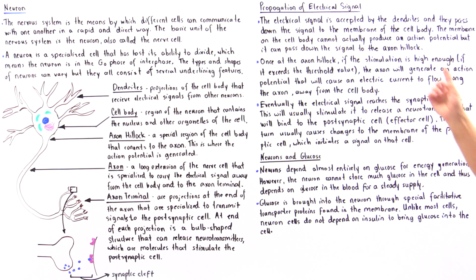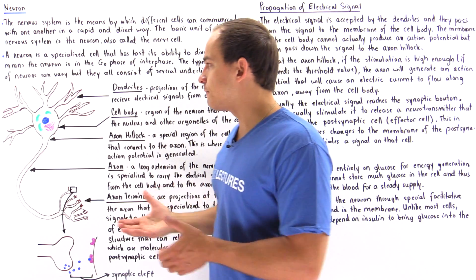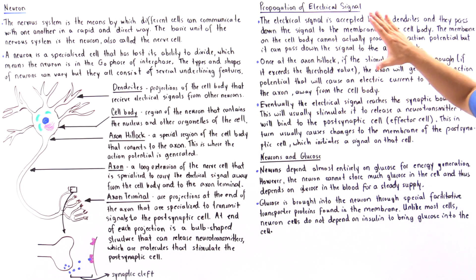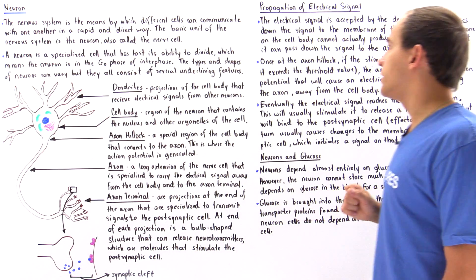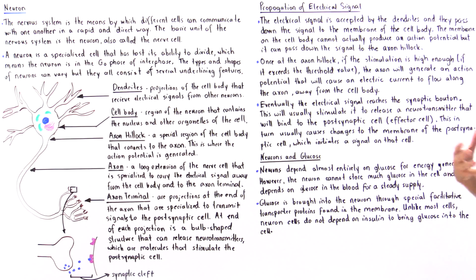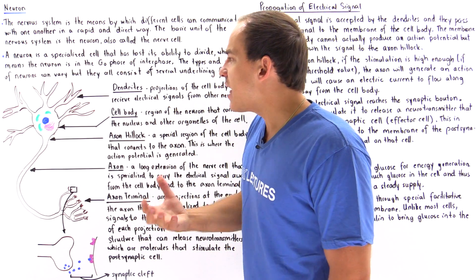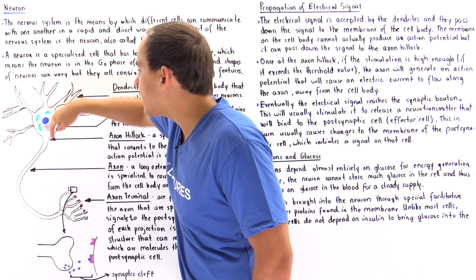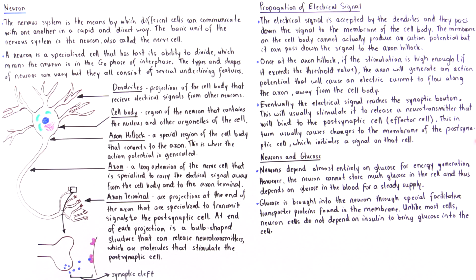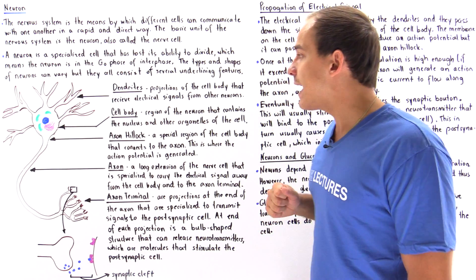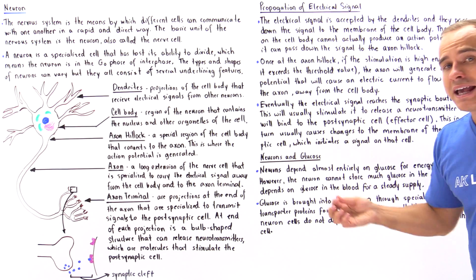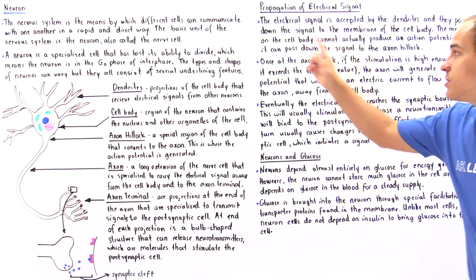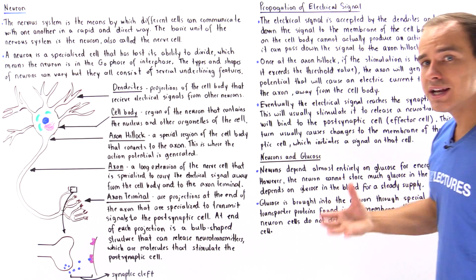Now let's briefly discuss the propagation of the electrical signal from the beginning to the end of our neuron. The electrical signal is received by the dendrites of our cell, as shown in the diagram. Once the dendrites receive this electrical signal, they send it through the cytosol and the membrane of the cell body. The cell body is not itself capable of producing an action potential, but it can pass the electrical signal to the axon hillock. Once at the axon hillock, if the stimulation is high enough and reaches or exceeds the threshold value, then the axon hillock will generate an action potential.